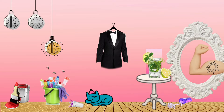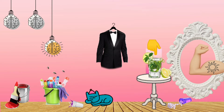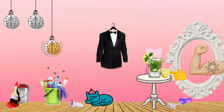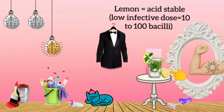The man is a bodybuilder who takes detox water, seen on the table, and medications lying on the floor. The glass with the drink represents dehydration as a metabolic complication requiring fluid replacement. The lemon beside the glass represents that Shigella is acid stable and thus requires a very low infective dose of about 10 to 100 bacilli to produce infection.